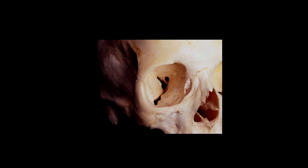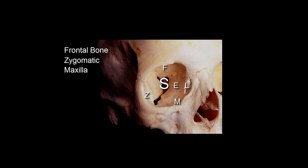Looking in the eye socket again — the orbit — we have a mnemonic. If you haven't seen the video yet, check out the video on learning the bones of the eye socket. Our mnemonic is Frank Zappa and the Mothers for LES — L-E-S. Those bones that make up the eye socket are the frontal bone, the zygomatic, the maxilla, the lacrimal, the ethmoid, and the sphenoid.